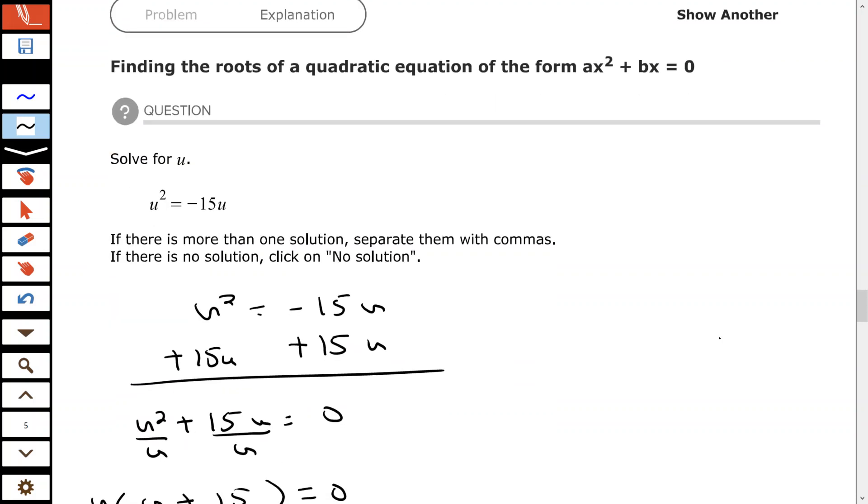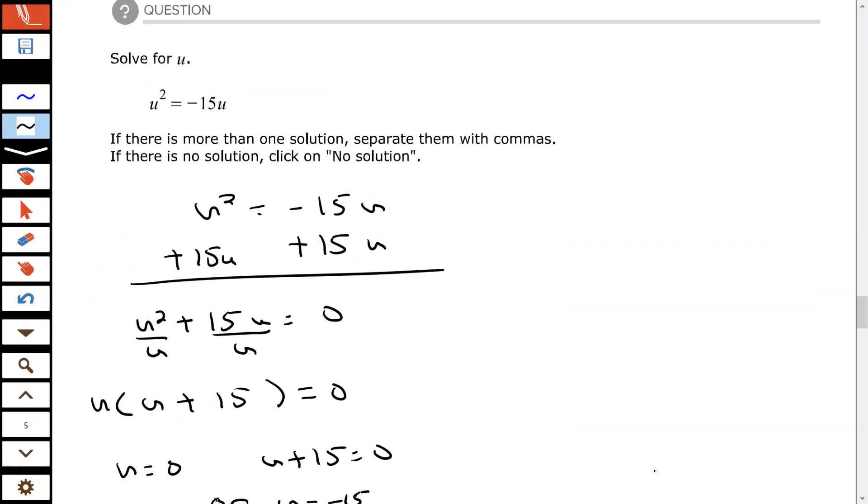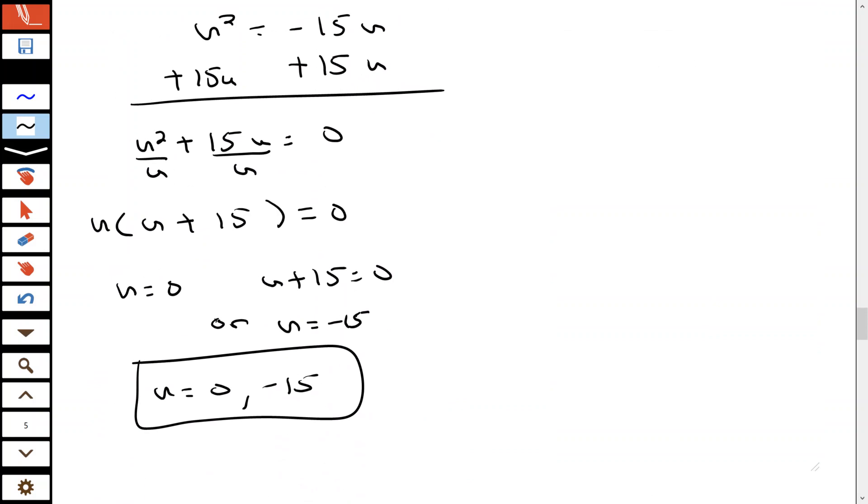All right, and that's how you find the roots of a quadratic equation of the form ax squared plus bx equals zero. Hope you found that to be helpful, thank you so much.